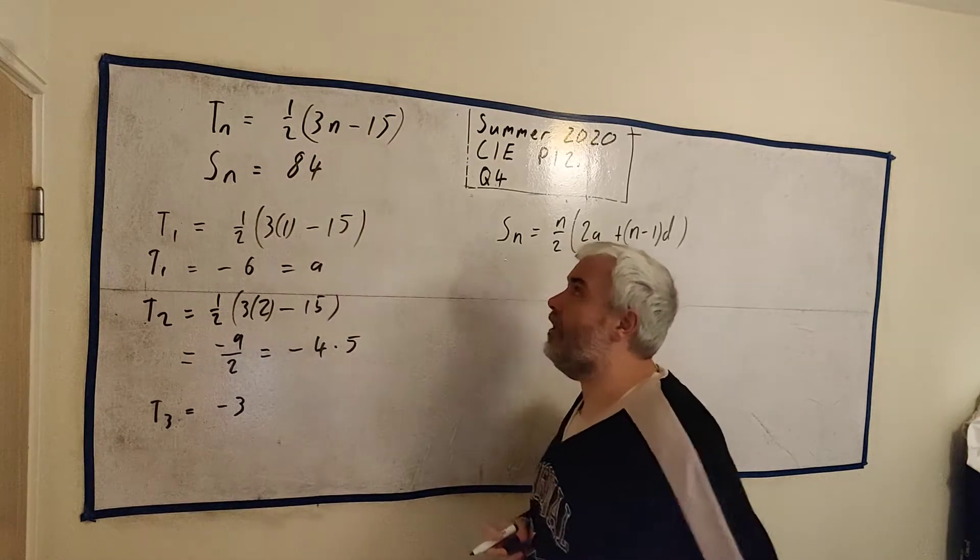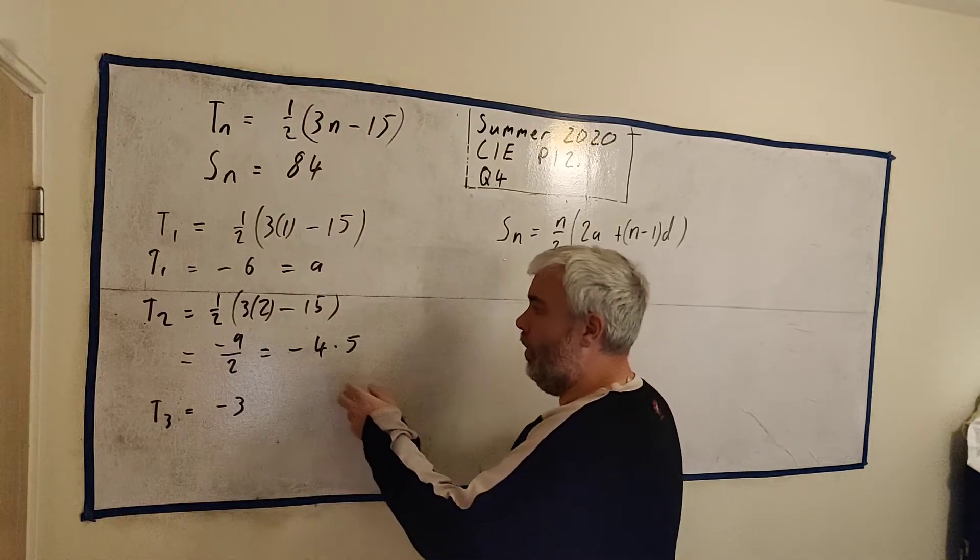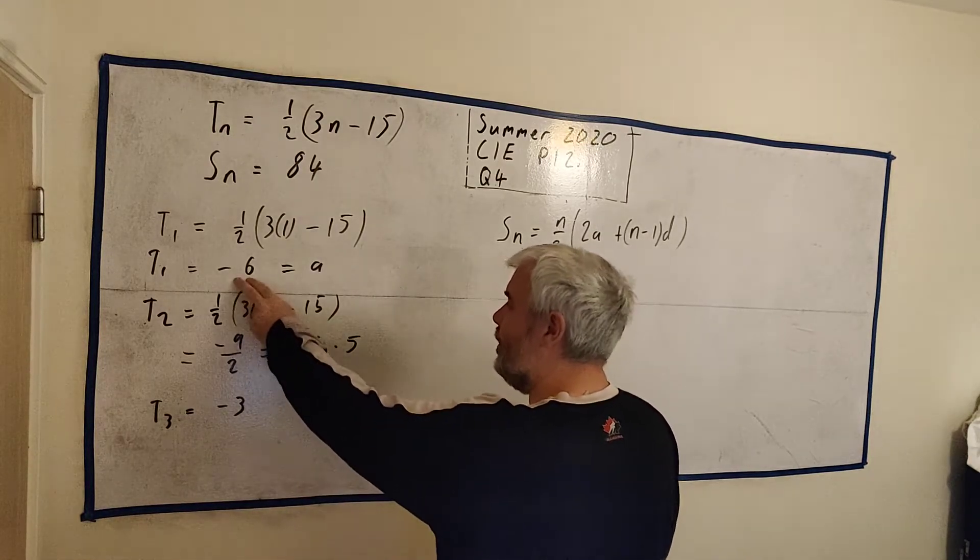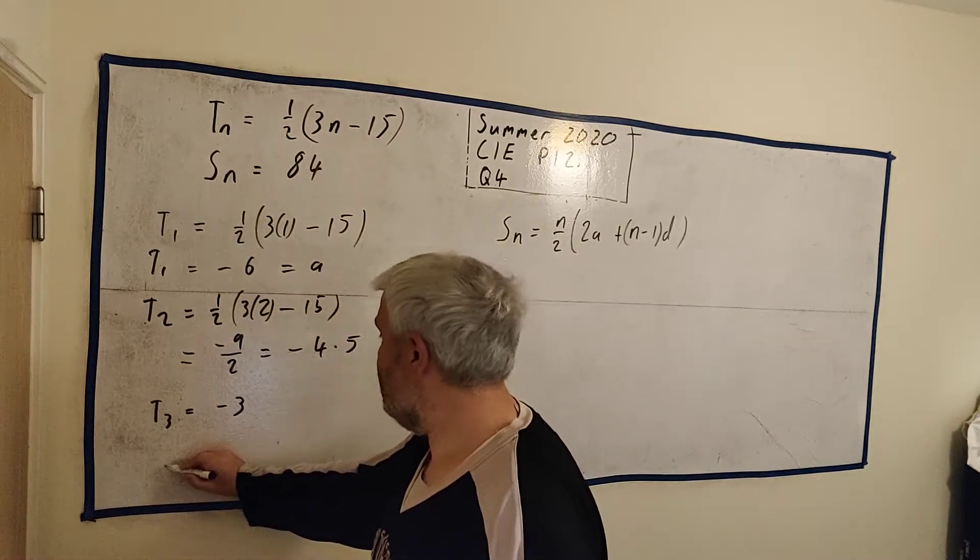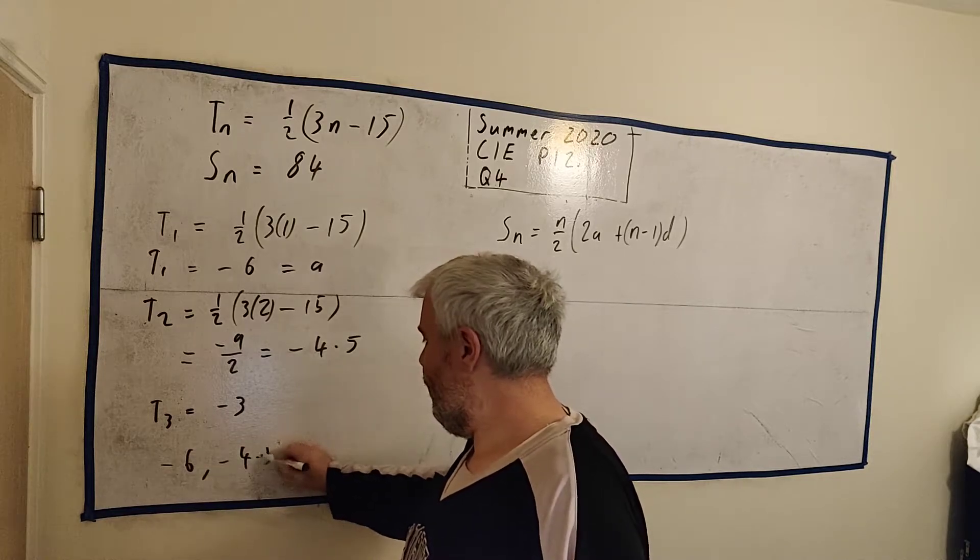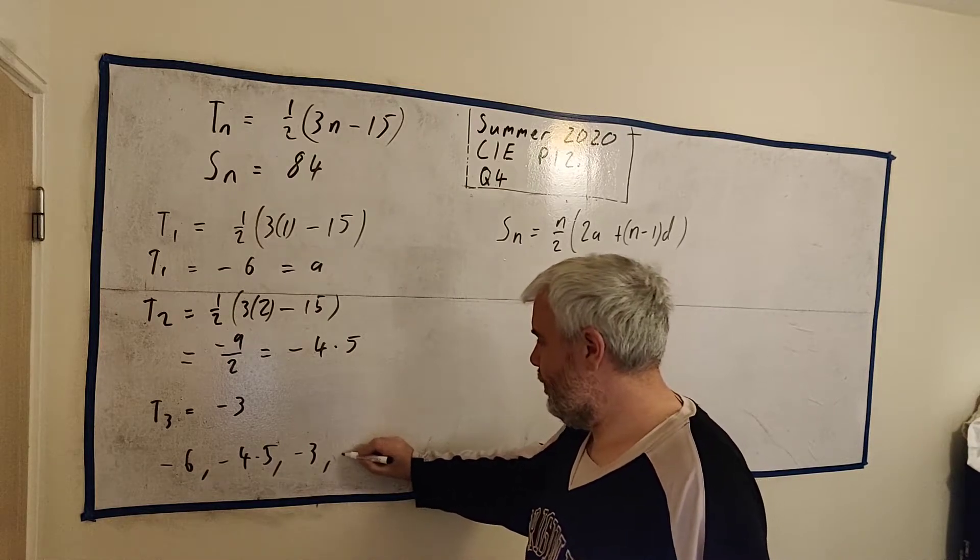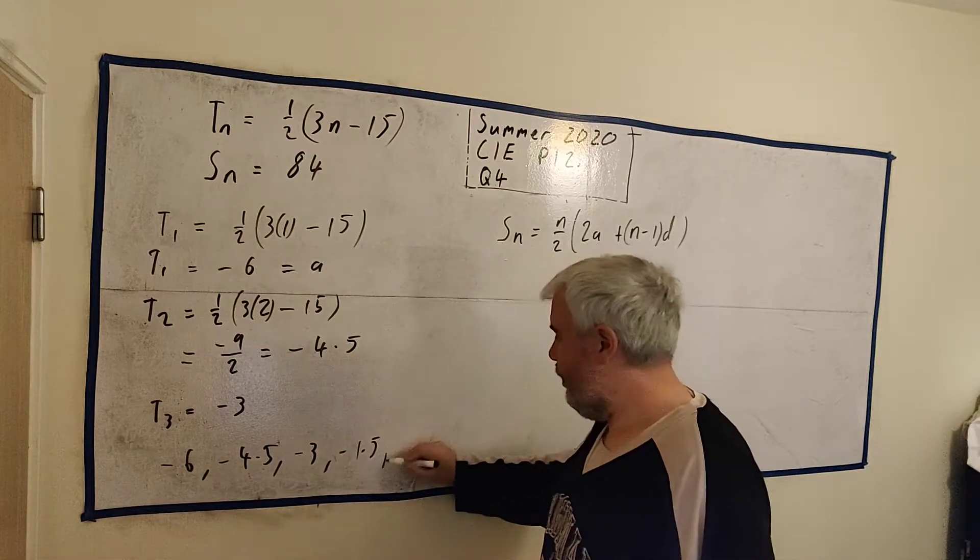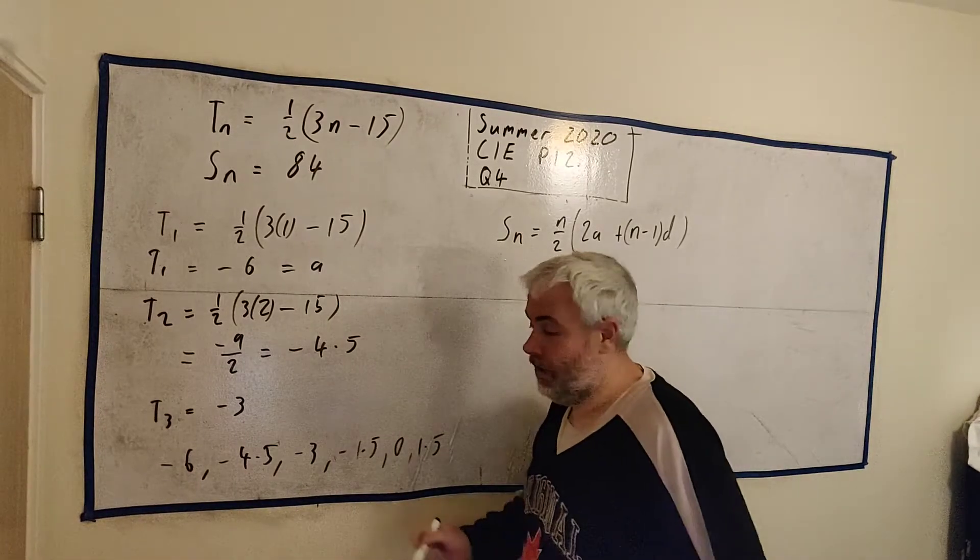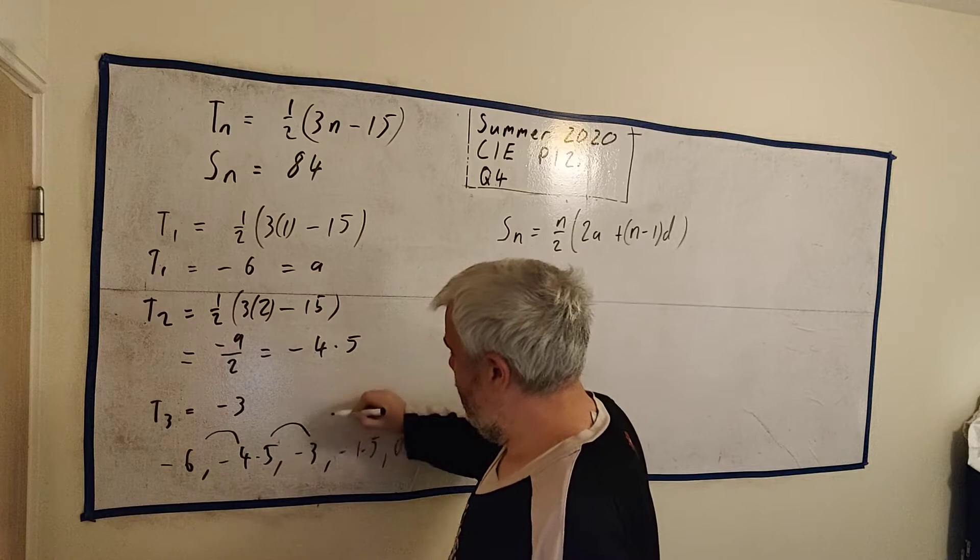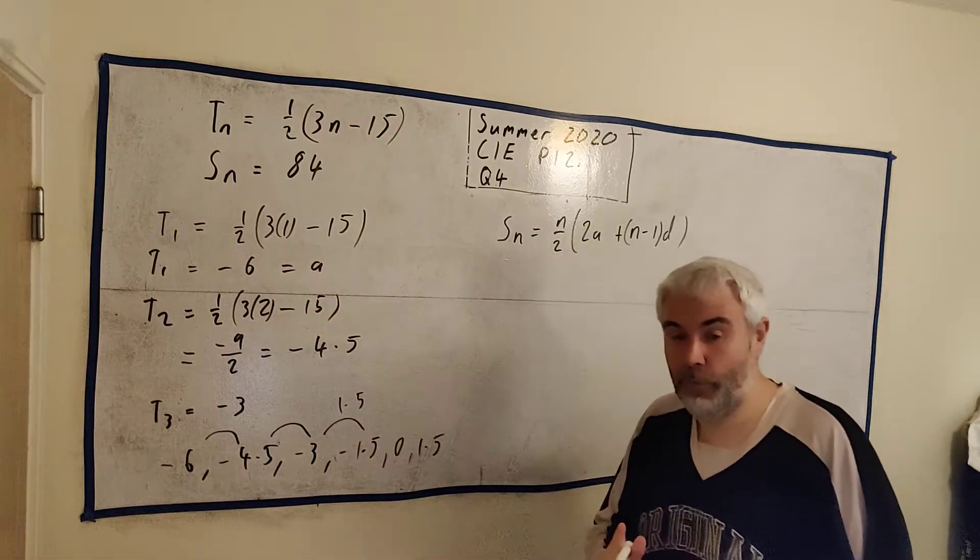9 minus 15 is minus 6. Minus 6 divided by 2. That is right. But I can already see it because it's minus 6, minus 4 and a half, minus 3. Let's write that out another way. Minus 6, minus 4.5, minus 3. What's next? Minus 1.5, 0, 1.5. The common difference here, the D is, what is it? It's 1.5 plus 1.5.